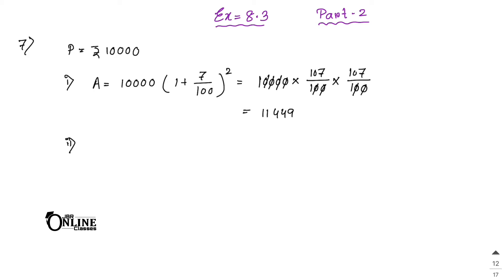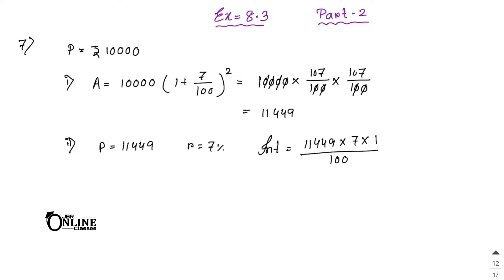Now part two: find the interest for the third year. Since 11,449 is the amount after the second year, it becomes the principal for the third year. So principal equals rupees 11,449, rate equals 7 percent. Applying the simple interest formula: I = 11,449 × 7 × 1 / 100, which equals rupees 801.43 as your answer.